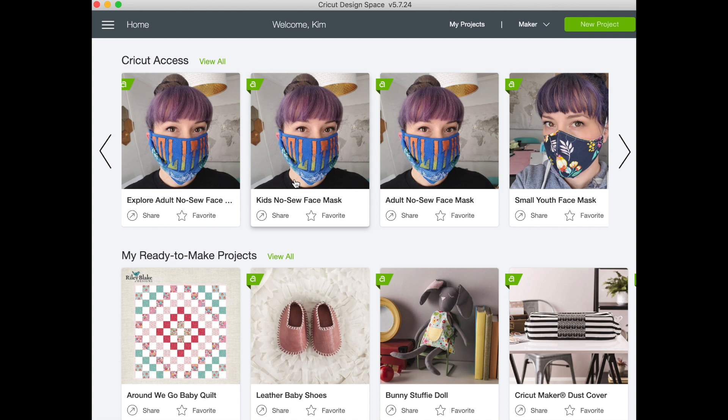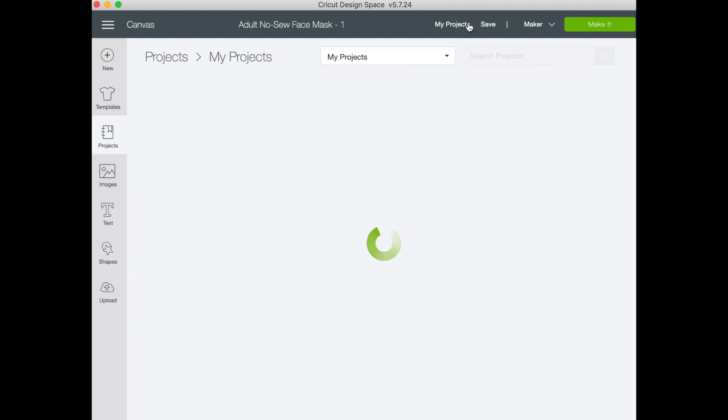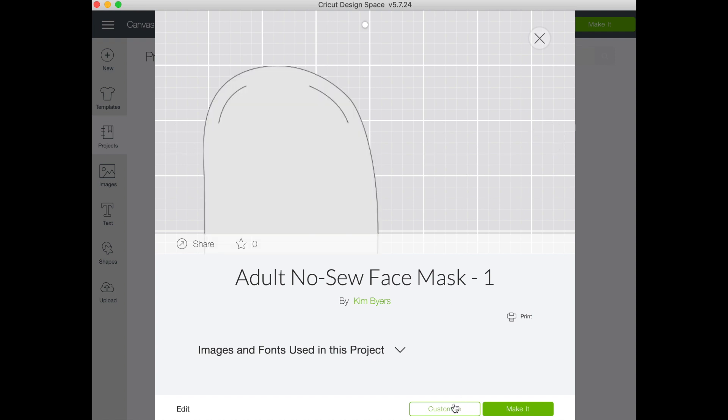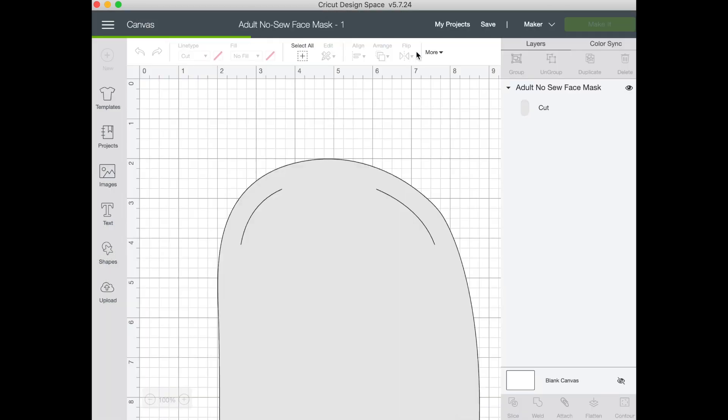And again if you do not have a machine, I'm going to put links down below to the Cricut blog where you can get the template. Okay so I have already added one to my projects. So let's go into my projects and we'll go to the mask and I'm going to customize it because I want to show you a couple things.